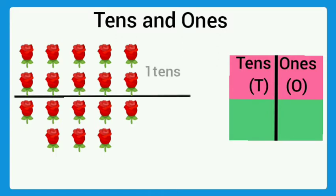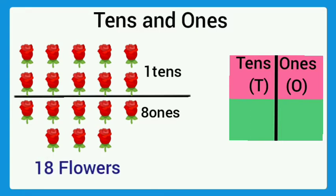1 ten. And how many ones are here? 1, 2, 3, 4, 5, 6, 7, 8. 8 ones. So the total number of flowers is 18. How to write 18? Here 1 ten and 8 ones. So 1 in the tens place and 8 in the ones place.